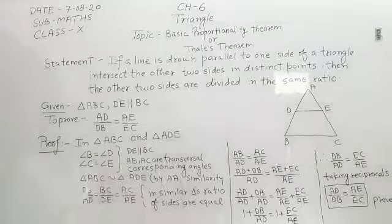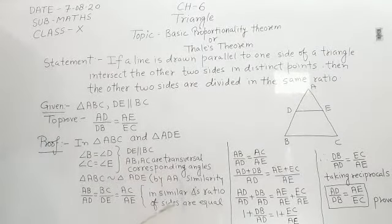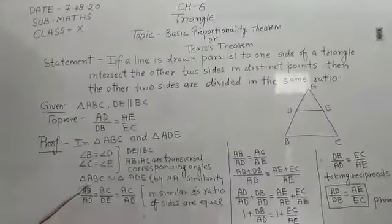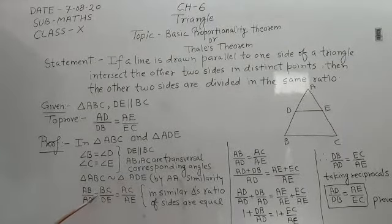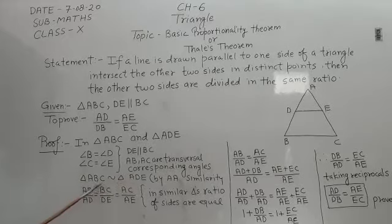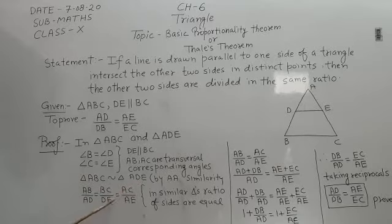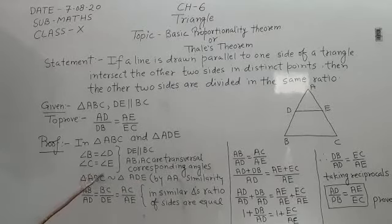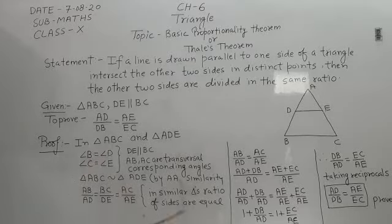Now, you know if two triangles are similar, then the ratio of their sides are also equal. It means, side AB of first triangle upon side AD of second triangle is equal to side BC of first triangle upon side DE of second triangle is equal to AC of first triangle and AE of second triangle.